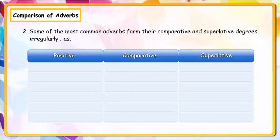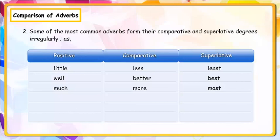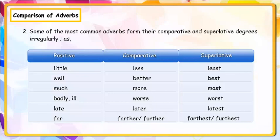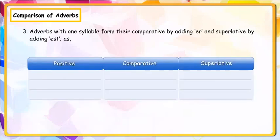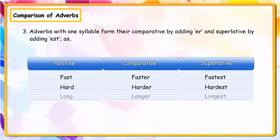Some of the most common adverbs form their comparative and superlative degrees irregularly. Positive / Comparative / Superlative: Little / Less / Least; Well / Better / Best; Much / More / Most; Badly / Worse / Worst; Late / Later / Latest; Far / Further / Furthest. Adverbs with one syllable form their comparative by adding '-er' and superlative by adding '-est'. Examples: Fast / Faster / Fastest; Hard / Harder / Hardest; Long / Longer / Longest.